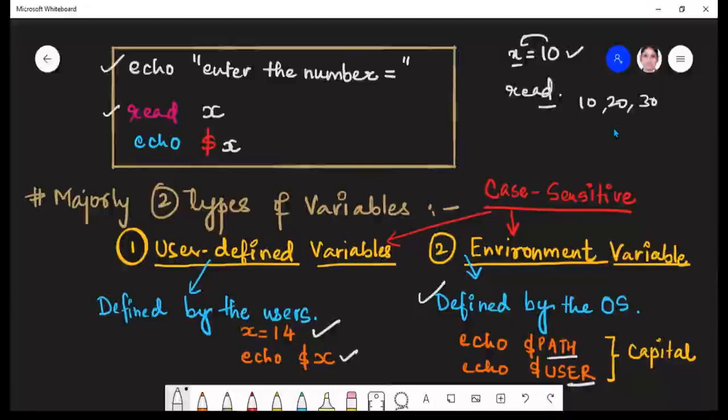So simply you have to write echo space. Then again, as you can see, this dollar symbol is a must. Here also you have used this dollar symbol. So whether it is user defined variable or environment variable, you have to use the dollar symbol before the variable name. So it is going to define the path of the shell, and this is going to tell who is the current user logged in.